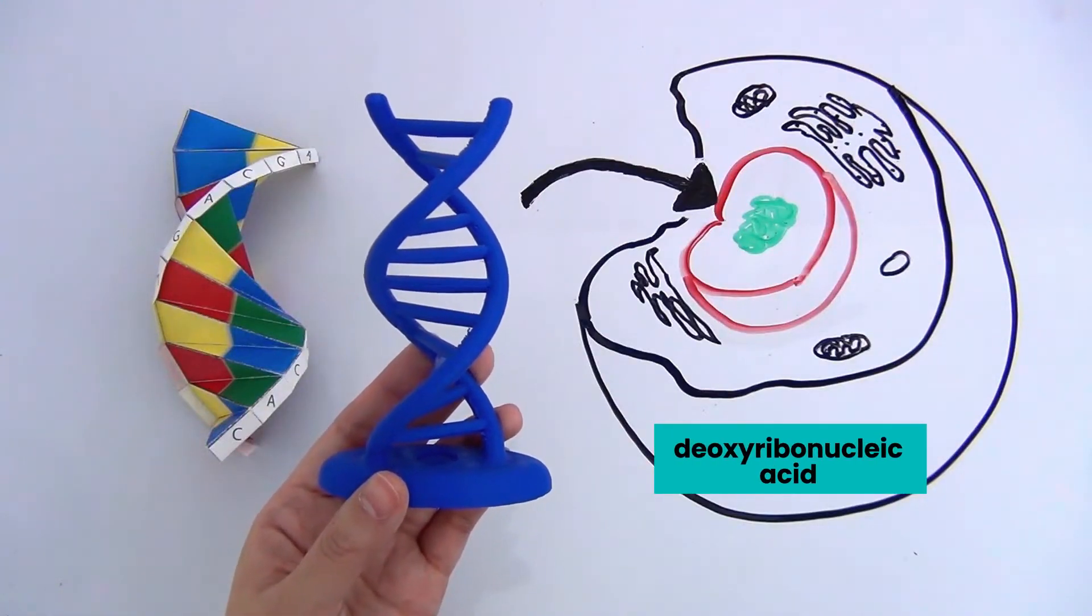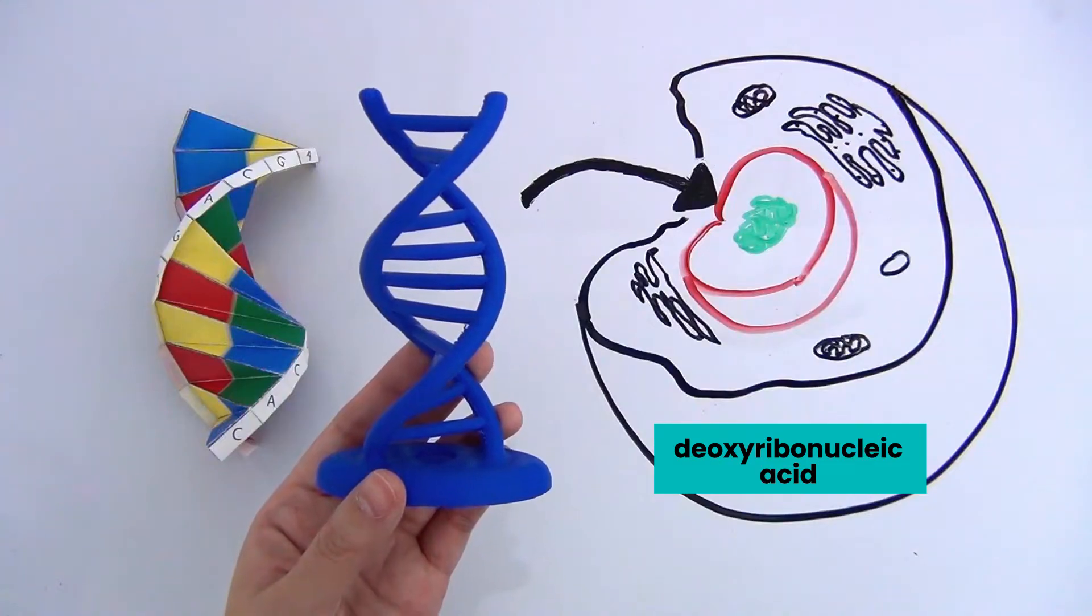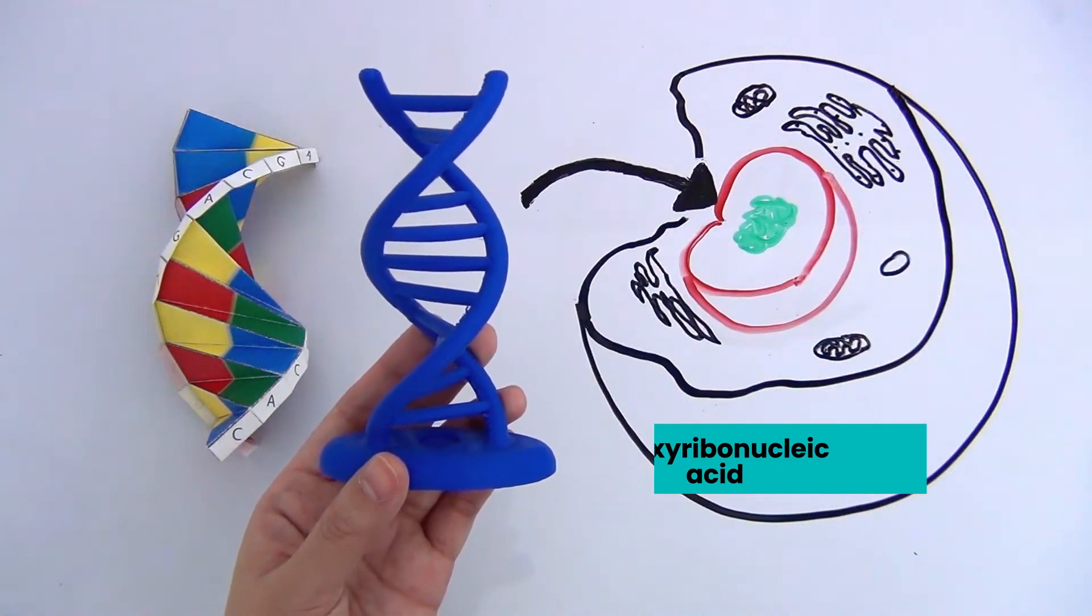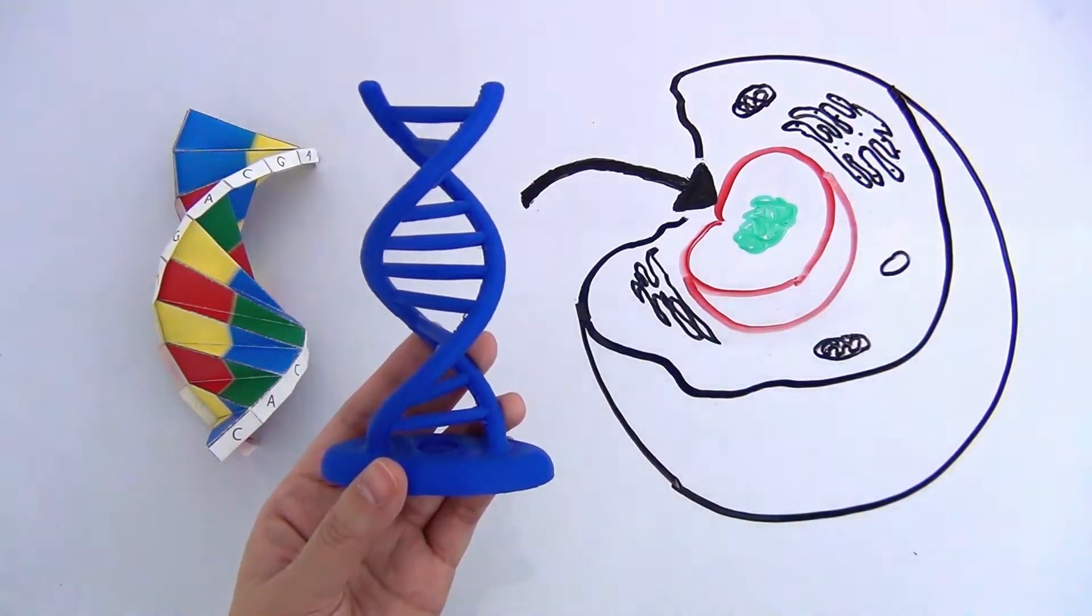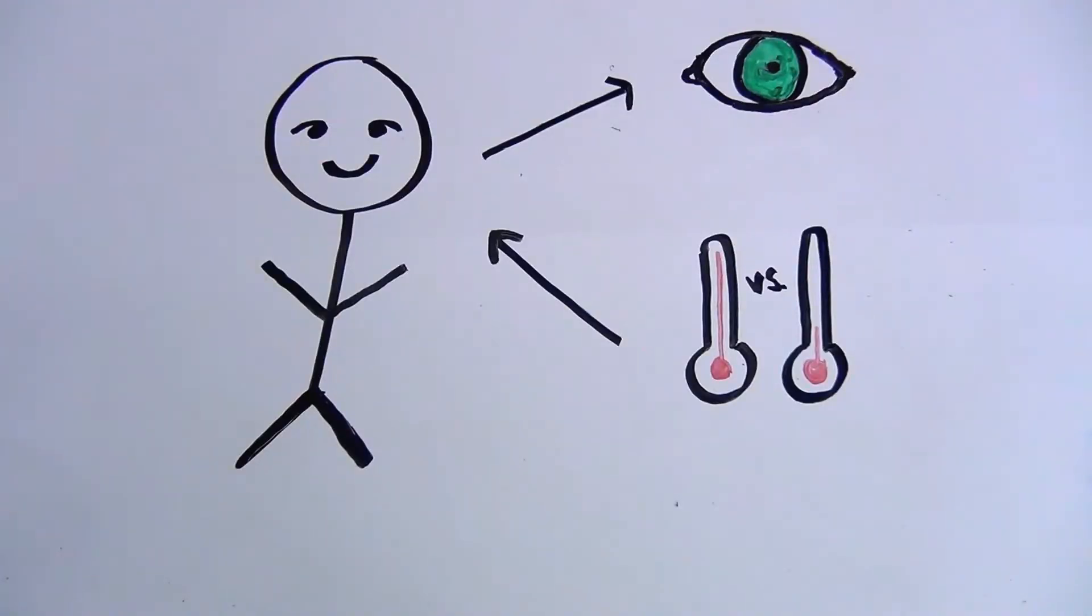DNA, or deoxyribonucleic acid, is a genetic material in all living things. Most of the DNA in a eukaryote is found in the nucleus. DNA determines almost everything that you are, from your eye color to how your body responds to different stimuli, and much more.